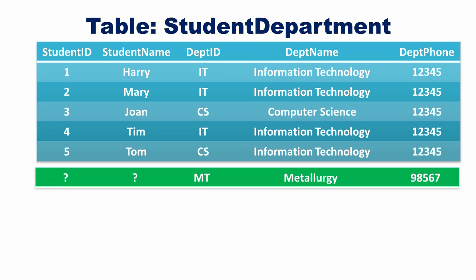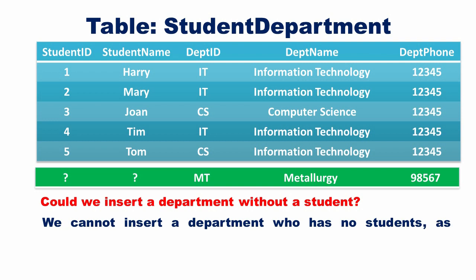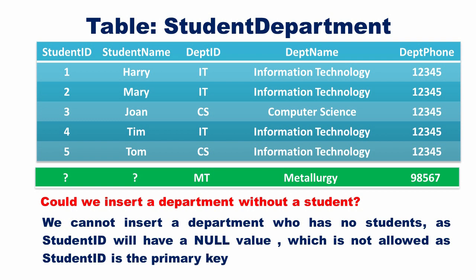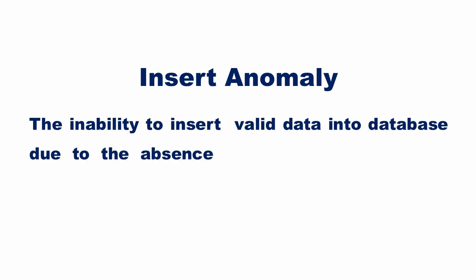Consider the same table student_department. Suppose we have a new department — metallurgy — and no student has joined the department yet. Could we insert a department without a student? We cannot insert a department that has no students, as student ID would have a null value, which is not allowed since student ID is the primary key. There is no way of entering department details unless we also enter a student's details.